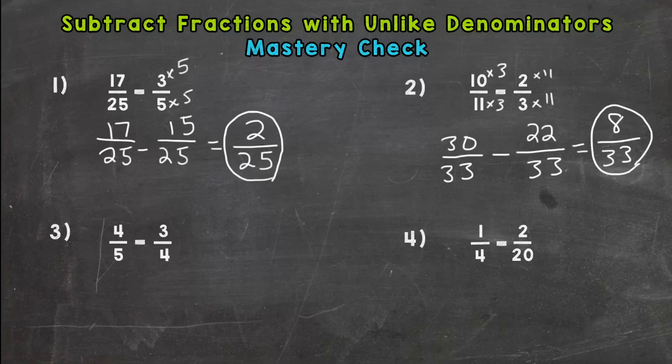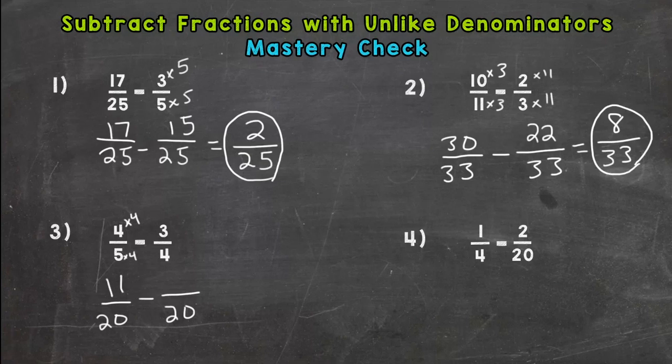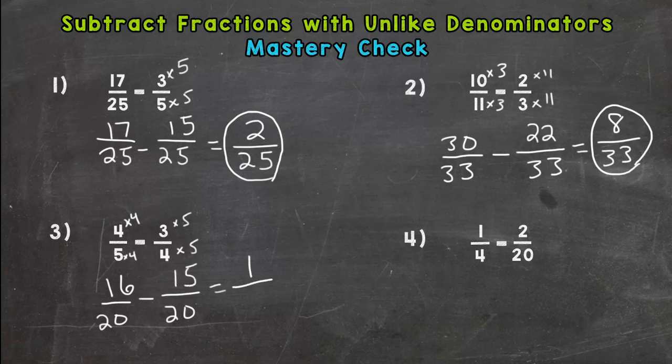Number 3: a 5 and a 4 for our denominators, so our common denominator is 20. Five times 4 is 20, so 4 times 4 is 16. Four times 5 is 20, 3 times 5 is 15. 16 minus 15 is 1, keep our denominator the same: 1/20. We are done.